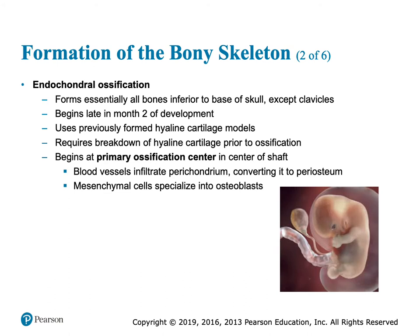Endochondral ossification forms all bones inferior to the base of the skull except the clavicles. This happens at about month two in the embryo. It's going to be from a hyaline cartilage model, and that hyaline cartilage is going to be replaced by bone. It's going to start in the center of the bone — the primary center of ossification — because most bones below the skull are fairly long.